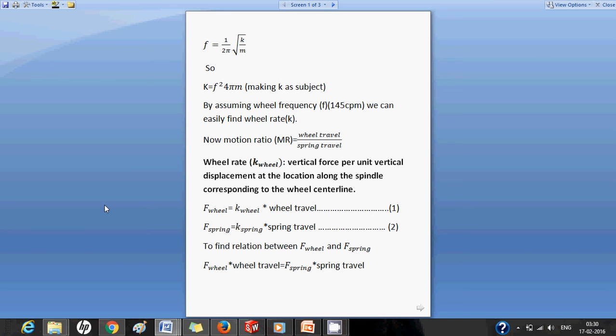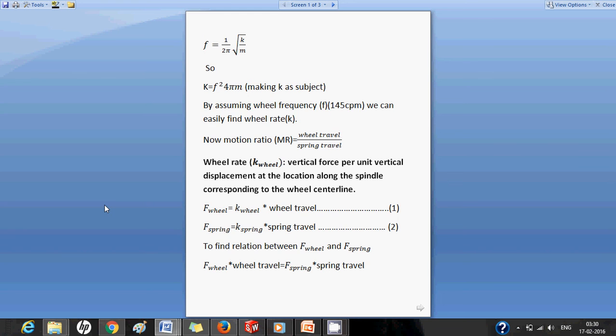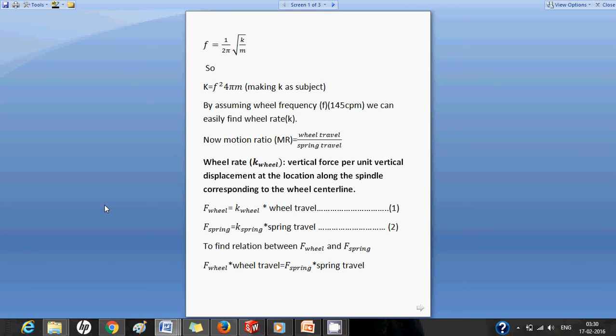Now our major concern is not the wheel rate but the spring rate. So in order to find the spring rate from the wheel rate we need to define certain new terms. So motion ratio is equal to wheel travel by spring travel. Now we know that wheel rate is the vertical force per unit vertical displacement at the location along the spindle corresponding to the wheel centerline. So using these definitions we can say f wheel is equal to k wheel into wheel travel, and for spring f spring is equal to k spring into spring travel.